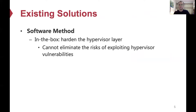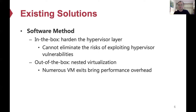There are some existing solutions to defending against this threat. The first one is a software-based method, which can be further subdivided into two subtypes. The in-the-box approach attempts to harden the hypervisor layer using various techniques such as hypervisor decomposition and CFI. However, such approaches can mitigate threats to a certain extent but cannot eliminate the risks. The out-of-the-box approach exploits a nested hypervisor to deprivilege the commercial hypervisor and securely interposes all interactions between guest virtual machines and the hypervisor, but at the cost of notably increased VM exits to the nested hypervisor.